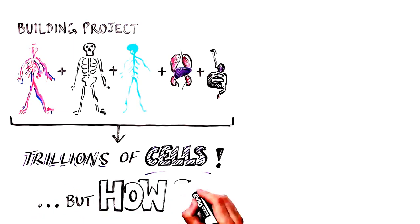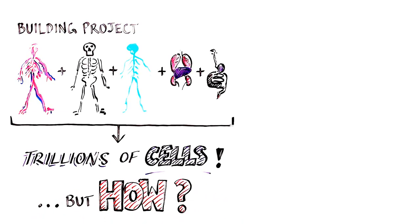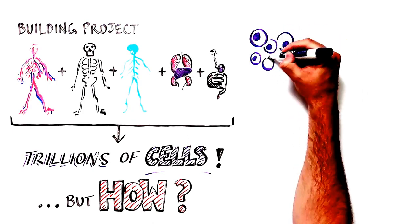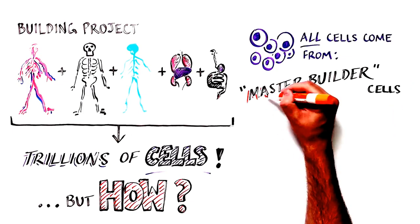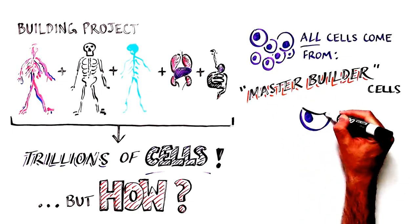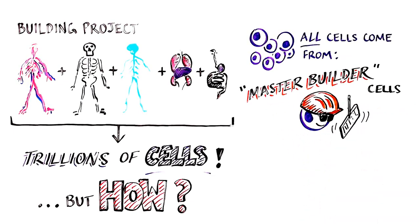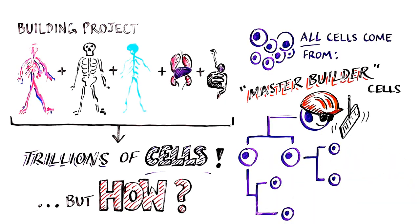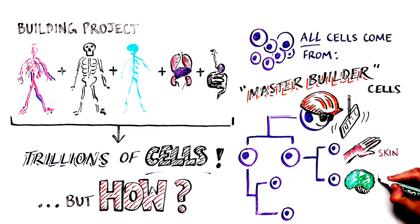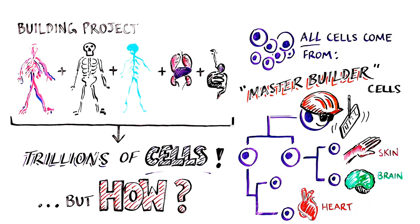How are all of the parts formed, correctly assembled during construction and maintained as we grow old? Amazingly, all of the different types of cells in the body are derived from a small group of versatile master builder stem cells, called pluripotent stem cells, which can generate any type of tissue or cell in the body, a skin cell, brain cell or a heart cell.